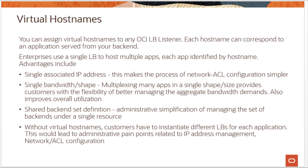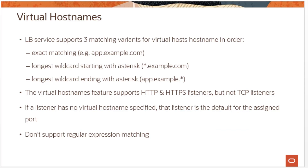You can define an exact virtual hostname such as app.example.com, or you can use wildcard names. Wildcard names include an asterisk in place of the first or last part of the name. When searching for a virtual hostname, the service chooses the first match in the following order: exact name match (e.g., app.example.com), then the longest wildcard name beginning with an asterisk (e.g., *.example.com). If a listener has no virtual hostname specified, that listener is the default for the assigned port. If all listeners on a port have a virtual hostname, the first virtual hostname configured for that port serves as the default listener.